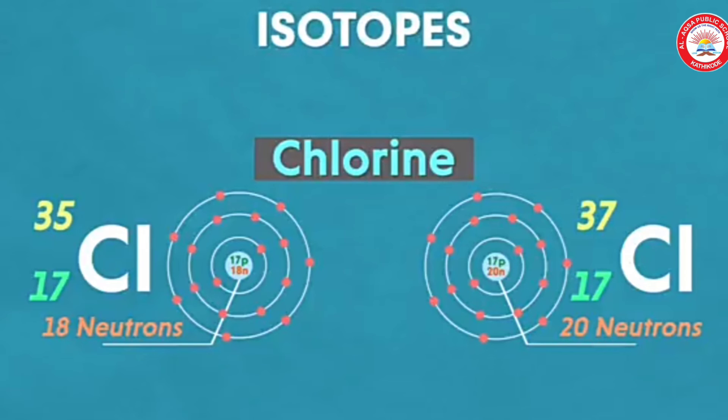Chlorine occurs in nature in two isotopic forms that we have already discussed, that is with masses 35U and 37U in the ratio 3 is to 1. Now, then what should we take as the mass of chlorine atom?